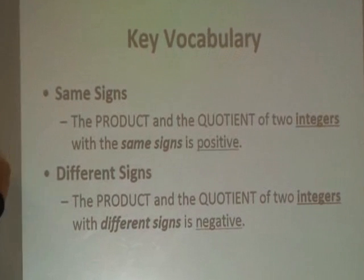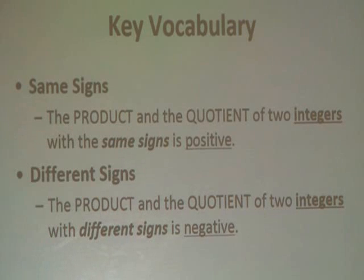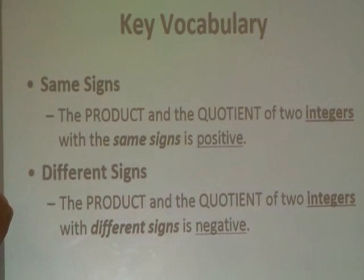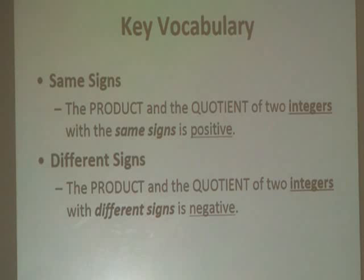The first is same signs. The product and the quotient of two integers with the same signs is positive. The next vocabulary word we'll focus on is different signs. The product and the quotient of two integers with different signs is negative.